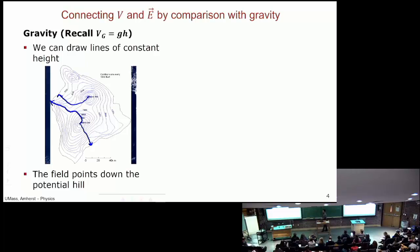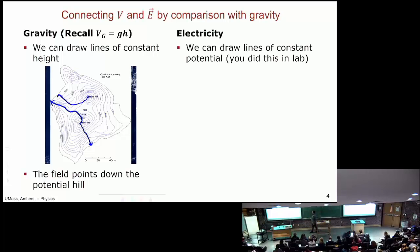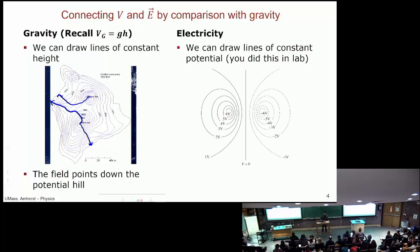We can repeat this for electricity. We can draw lines of constant potential. This is my positive charge, this is my negative charge. If we go and have a look at our potential as generated by point charges—